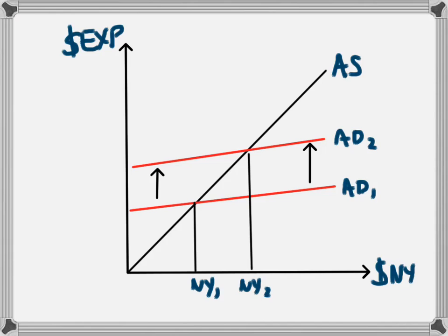There is a video called 'the multiplier effect' which explains this next step. Basically, the level of aggregate demand has increased by this amount here, and the level of national income has increased by a greater amount than just the level of aggregate demand — that's because we have a multiplier effect. So the increase in AD is by this amount here, and the increase in national income is by this larger amount here.